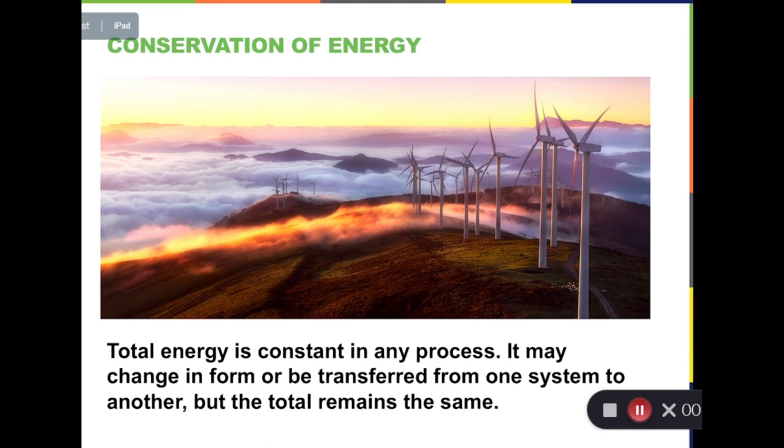If we consider all types of energy in a closed system, like the universe, the total energy is conserved. This is called the law of conservation of energy, which can be described as total energy is constant in any process. It may change in form or be transferred from one system to another, but the total remains the same.